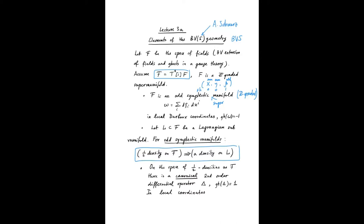Half density on F, on the total space, induces a density on L. This is only for odd symplectic manifolds. This is not true when ω is an even symplectic structure. In the usual case, it's definitely not true.